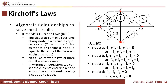Applying KCL at node C, we have: negative IB plus IC plus I3 plus I4 equals zero. At node D, we have: negative IA minus I5 equals zero. That is Kirchhoff's Current Law.